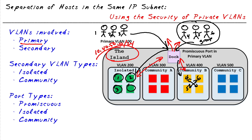The reason they call it private VLANs is because we have multiple VLANs working together. The primary VLAN in this example is VLAN 100, and we also have secondary VLANs which are like subsets or subdomains of the primary VLAN. In this example we have VLANs 200, 300, 400, and 500 as secondary VLANs. Not all secondary VLANs are created equal — there are two types: isolated and community.